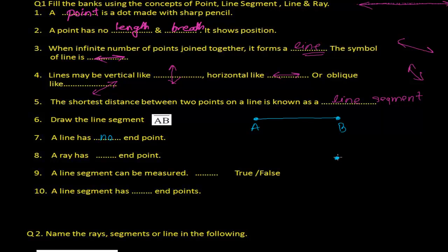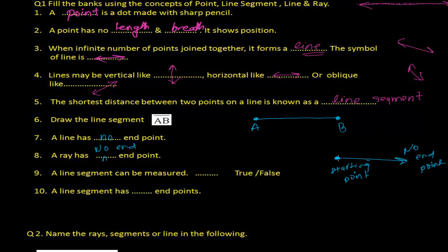A ray starts from some source and goes somewhere — it has a starting point but no endpoint. The starting point is there, but it never ends on the other side. So a ray has one starting point and no endpoint on the other end. At this level we will say a ray has one endpoint, considering the starting point as the endpoint.